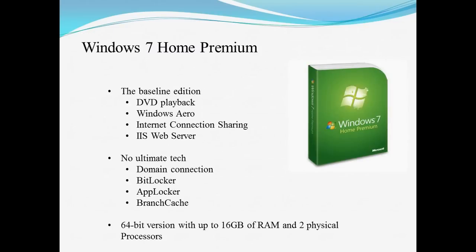The next version is Windows 7 Home Premium. This is the baseline version — it's what you will probably find if you were to go out and buy a laptop at the moment. You have DVD playback, Windows Aero, Internet Connection Sharing, and also IIS web server. With this version there is still no Ultimate Tech such as Domain Connection, BitLocker, AppLocker, and Branch Cache. There is a 32 and 64-bit version, with the 64-bit version capable of up to 16GB of RAM and also two physical processors.